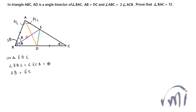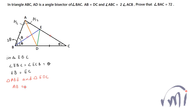Since triangle EBC is isosceles with angle EBC equal to angle ECB equal to theta, we get that EB is equal to EC. Now if we look at triangle ABE and triangle EDC, we know AB is equal to DC (given), we've derived that EB is equal to EC, and angle ECD is equal to angle ABE — both equal to theta.